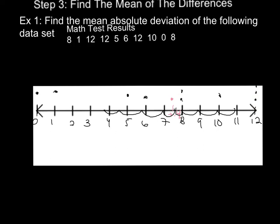And we have 1, 2, 3, 4, 5 that are included in one mean absolute deviation away from the mean.